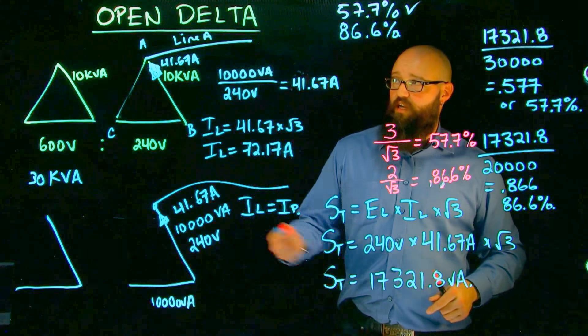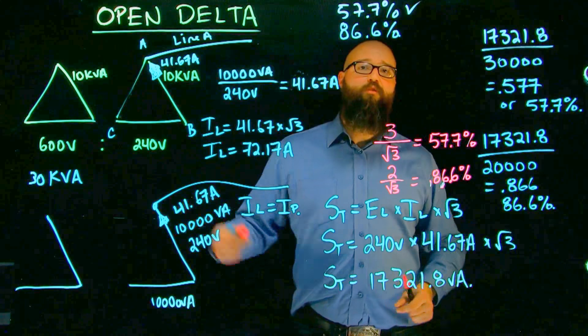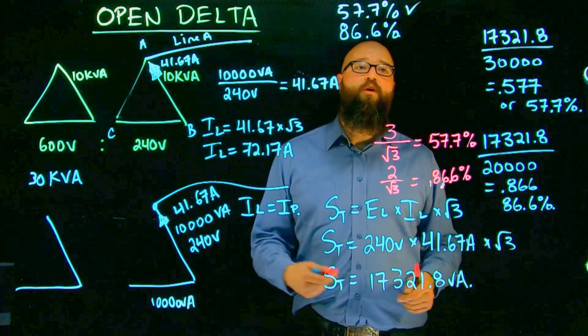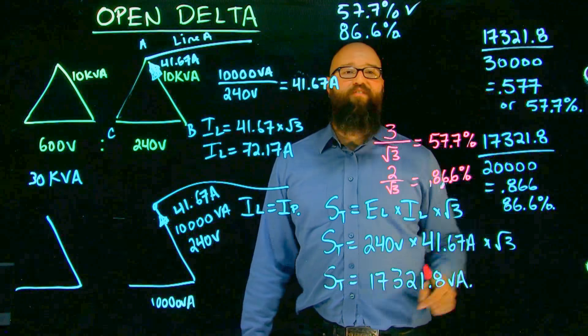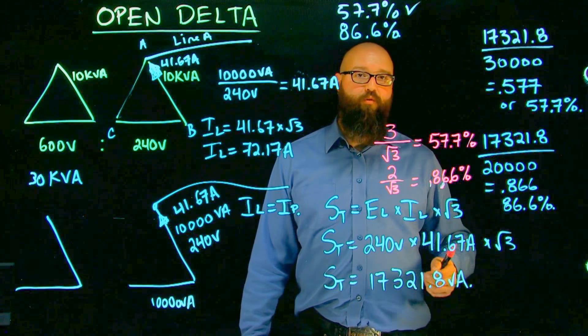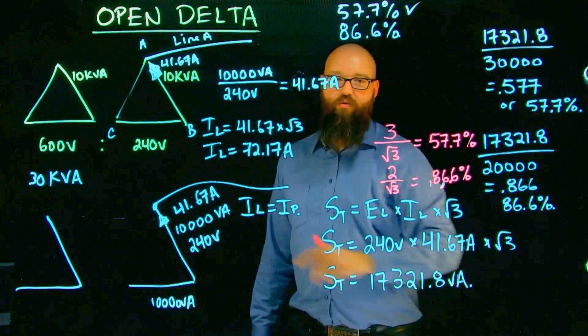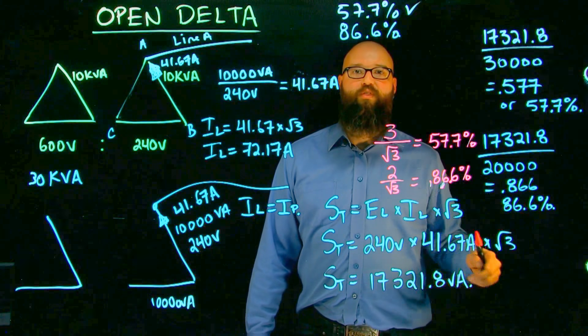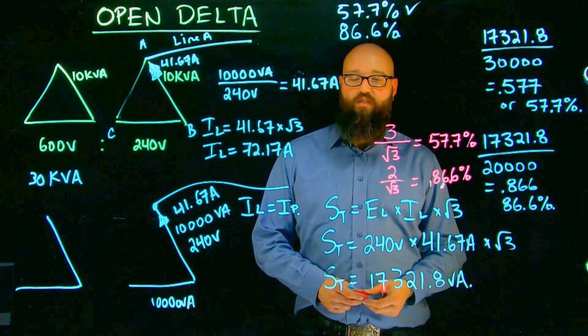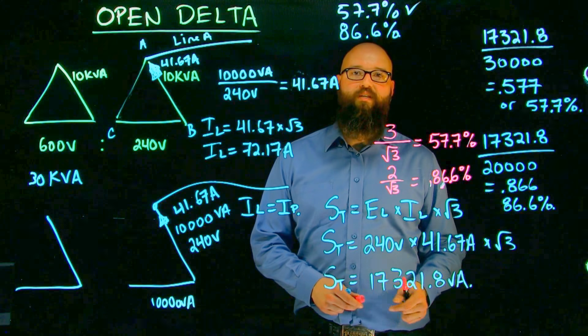Okay, hopefully this has helped. Okay, key thing to remember about open delta, when we do lose that, that third transformer, we reduce our overall capacity by 57 or to 57.7%. And we reduce our capacity of the two down to 86.6% of what they normally would be. Again, hopefully this has helped. Thank you for watching. We'll see you next time. Bye-bye.